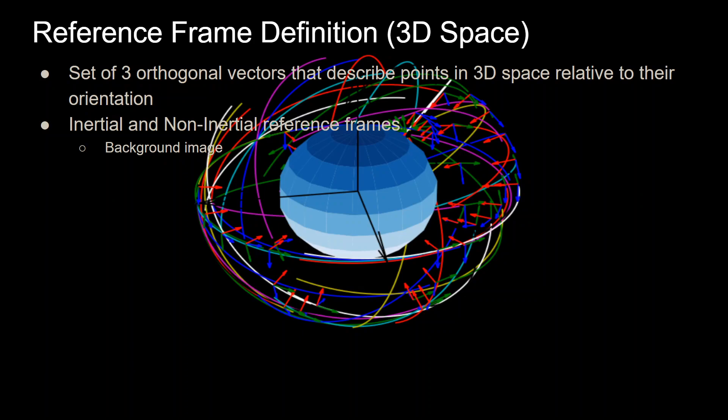What this means is three orthogonal vectors that are all perpendicular to each other in 3D space and describe points in 3D space with coordinates relative to their XYZ vectors, relative to their orientation, where their XYZ is.